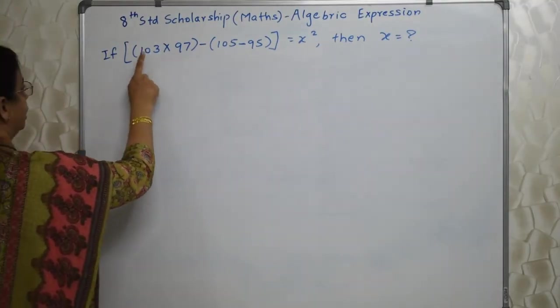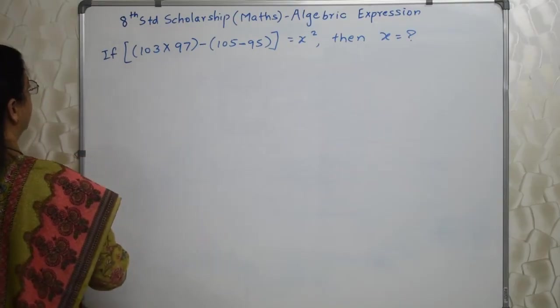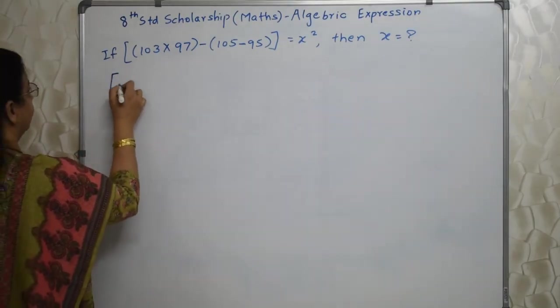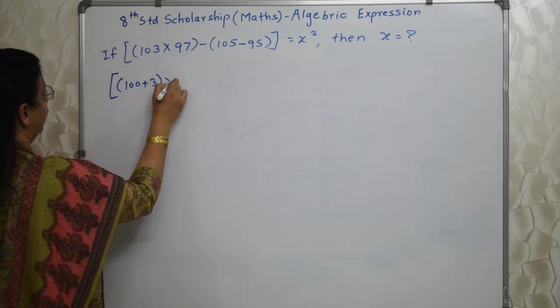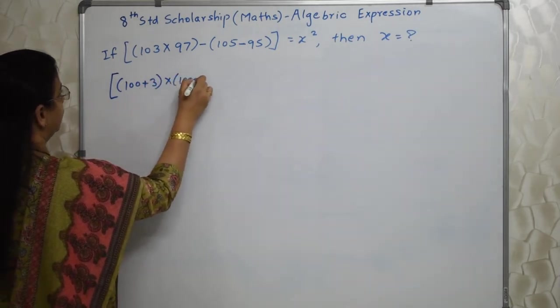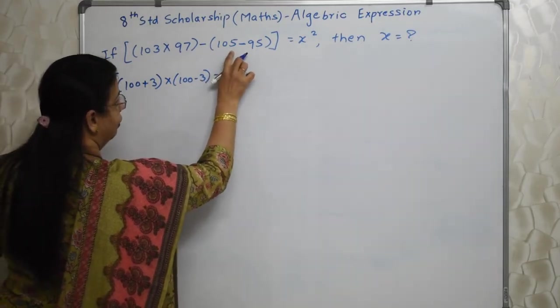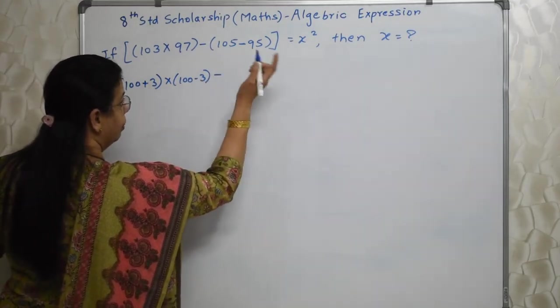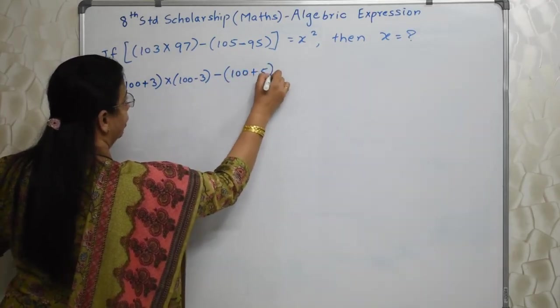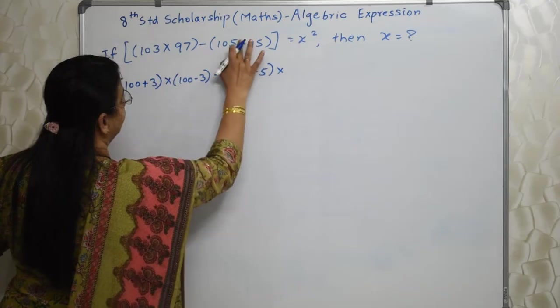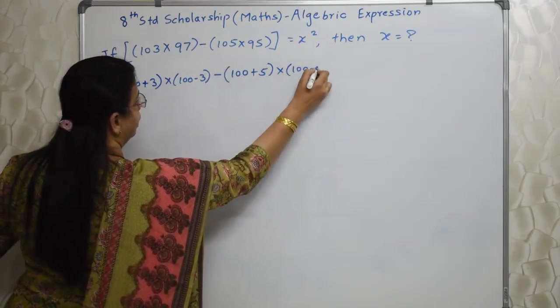Observe the numbers. 103 is 3 more than 100. 97 is 3 less than 100. So I can write this in the form of 100 plus 3 into 100 minus 3. And then minus again here 105 is 100 plus 5. 95 is 100 minus 5. So I am writing it 100 plus 5 into 100 minus 5.